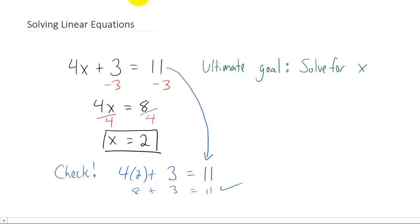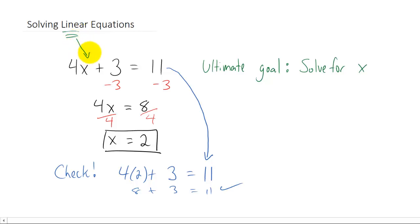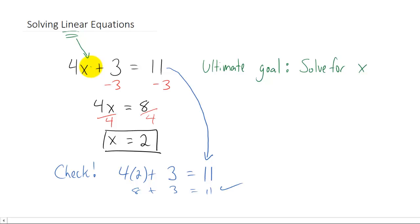Now let's explain why these are called linear equations. An equation is linear if the power on the variable is 1. In this case, we just have x as our variable, and that x is raised to the first power — it's there even though you don't write it. This is more specifically a linear equation in one variable, because there is only one variable in this problem.